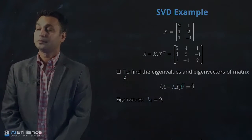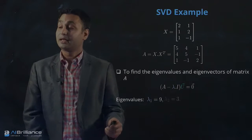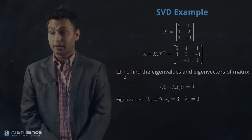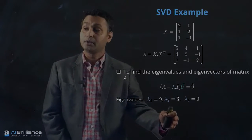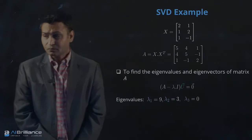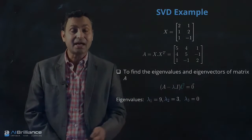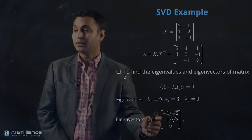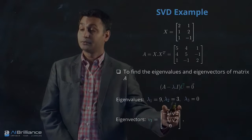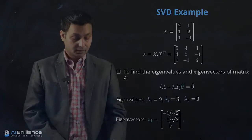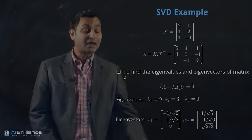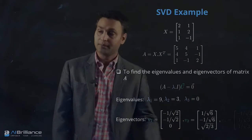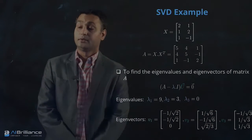Once we solve the eigenvalue problem for matrix A, we will get certain eigenvalues. This matrix has three eigenvalues: lambda 1 equal to 9, lambda 2 equal to 3, and lambda 3 equal to 0. Corresponding to each eigenvalue, we will have eigenvectors. For lambda 1, the eigenvector is V1 given by this vector; for lambda 2, eigenvector V2 is given by this vector; and for lambda 3, the eigenvector is given by this value.